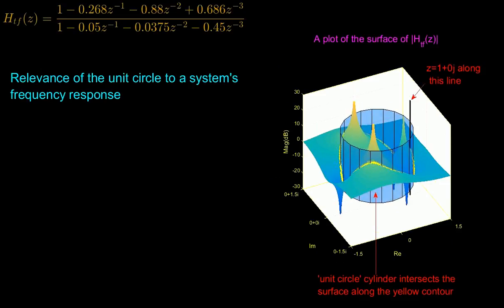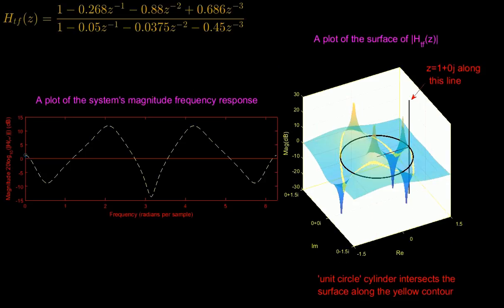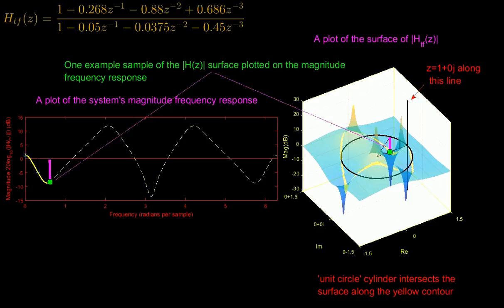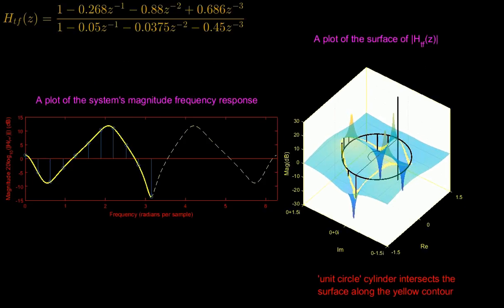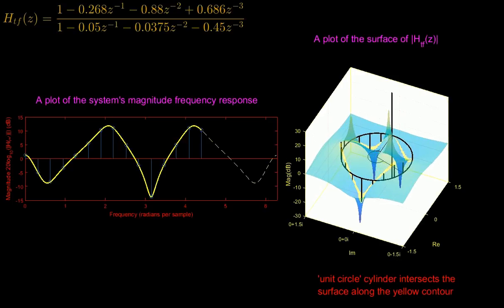In other words, we can take samples of the H surface along the yellow contour produced at the points of intersection, starting at location z=1 which corresponds to a frequency of 0 radians per second, and then moving around the unit circle in an anti-clockwise direction to build up a picture of the magnitude response of a system.